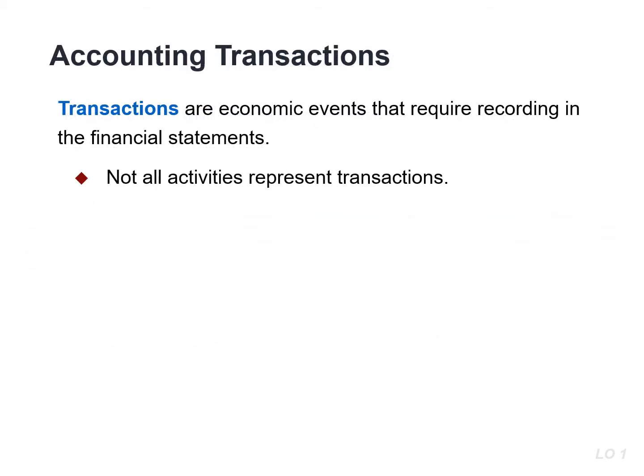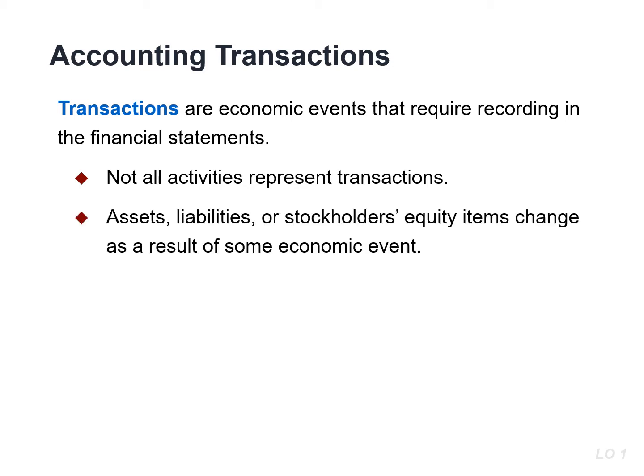To use an accounting information system, you need to know which economic events to record. Not all events or activities represent transactions — for example, hiring a new employee. An accounting transaction occurs when assets, liabilities, or stockholders' equity items change as a result of some economic event. The accounting equation must always balance.